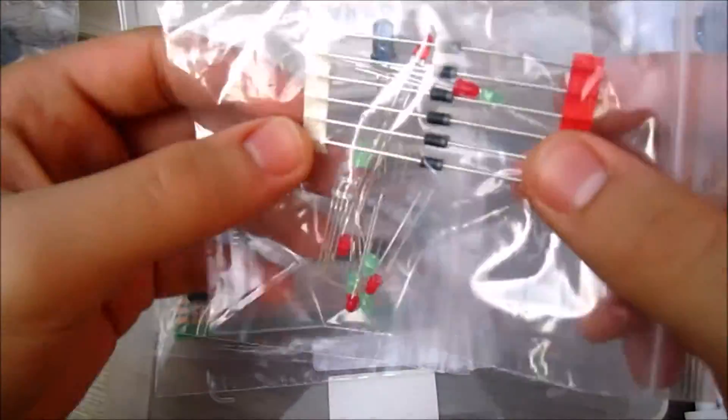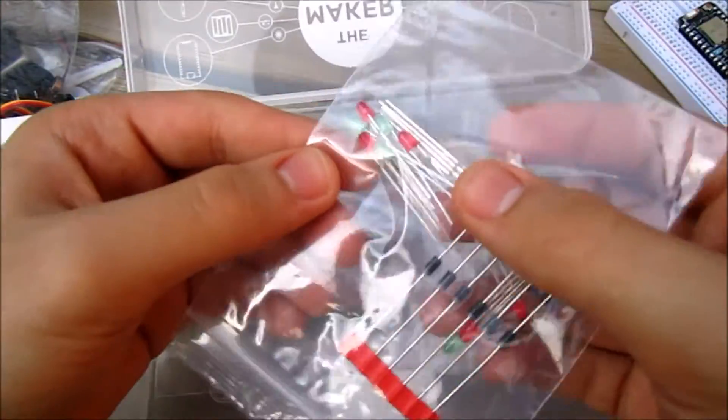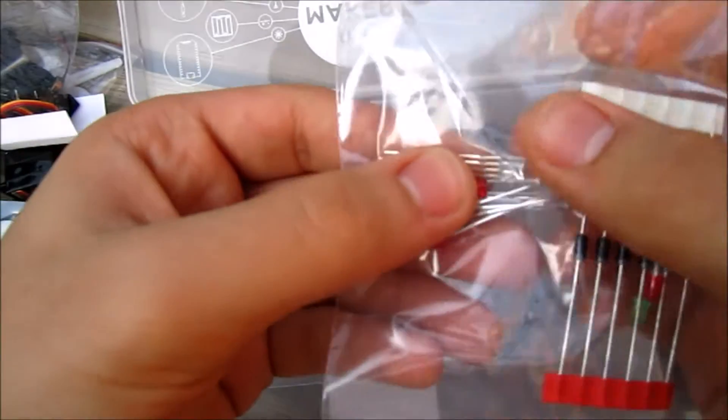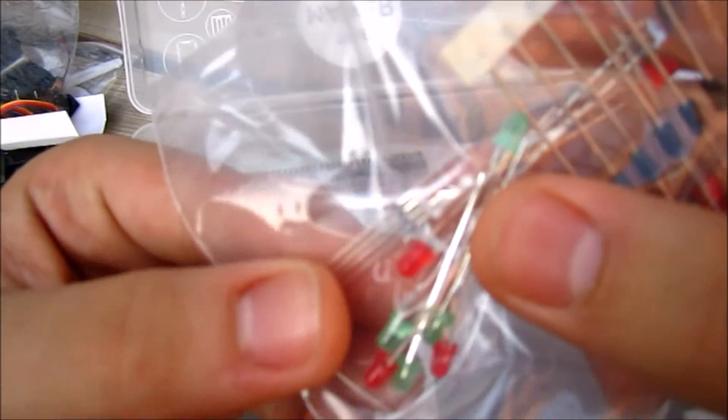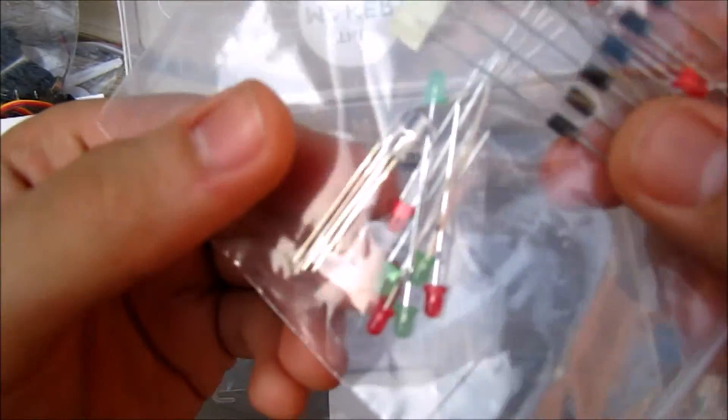We have a couple of—I think these are the resistors. We have some LEDs. One of them, this clear one, is actually RGB lights. So you can choose any color you'd like.